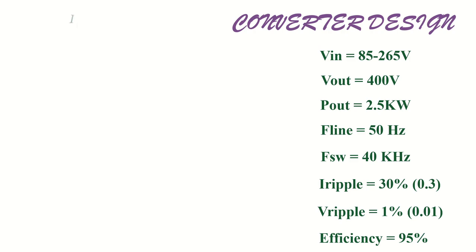Now RMS value of inductor current is given by I_L_RMS equals power output divided by efficiency times minimum value of input voltage RMS. That is I_L_RMS equals 2500 divided by 0.95 times 85, which gives 30.95 ampere RMS.